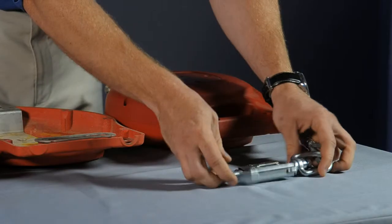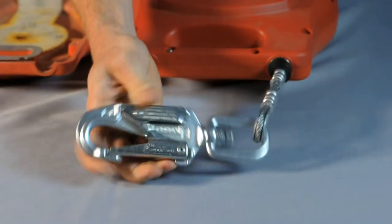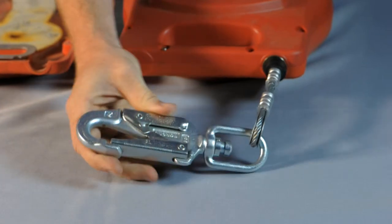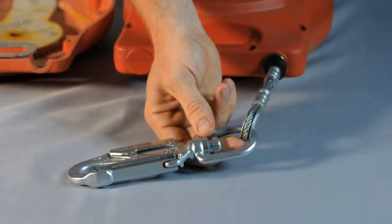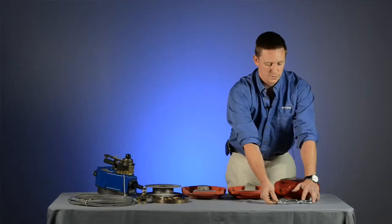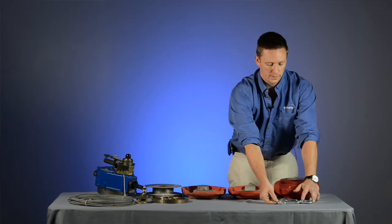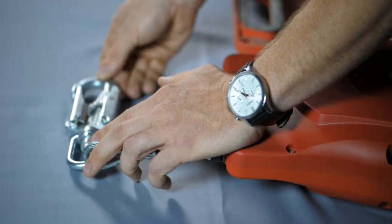We then check the snap hook, which is the device that connects directly to the end user's harness. All the snap hooks are designed with a load indicator. In the event of a fall, if this device sees over 900 foot-pounds, it will deploy the load indicator and you'll see a red line indicating that this has seen a fall.